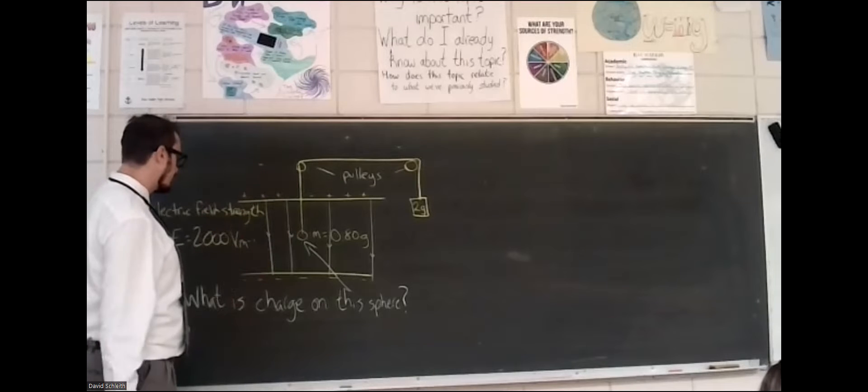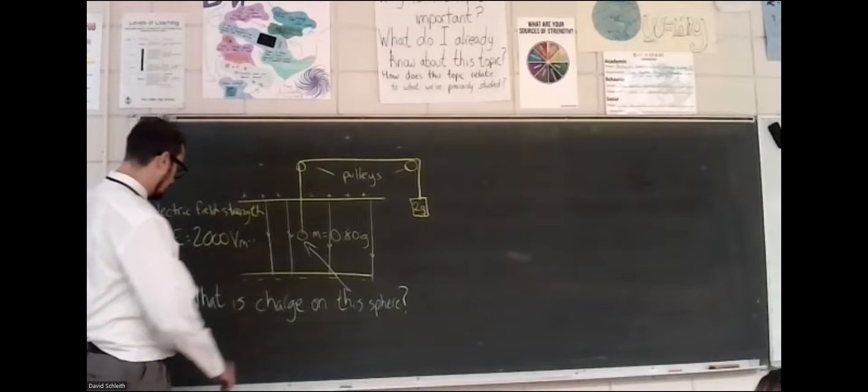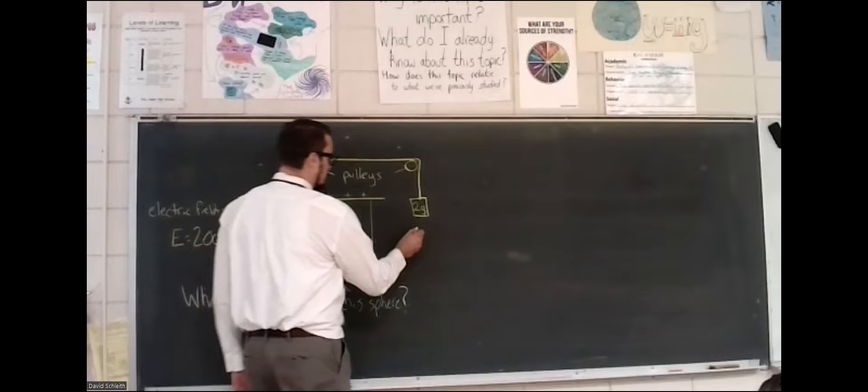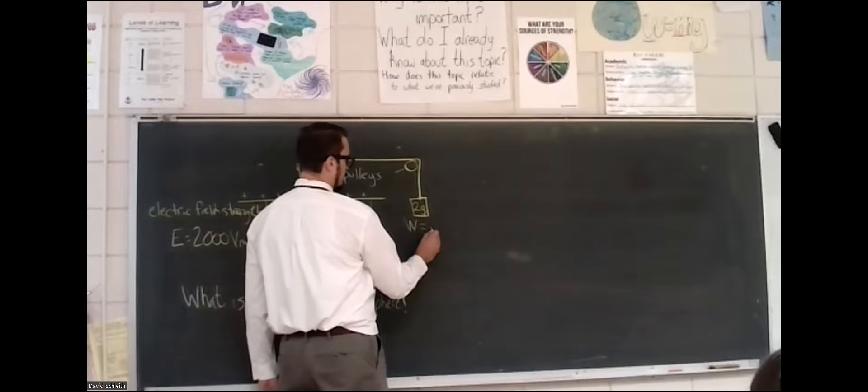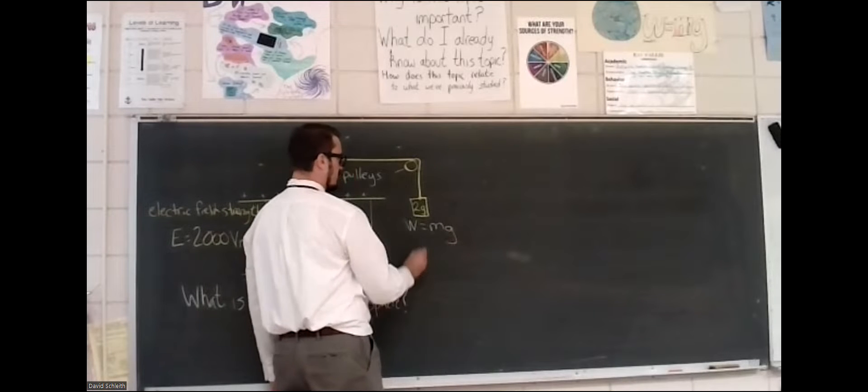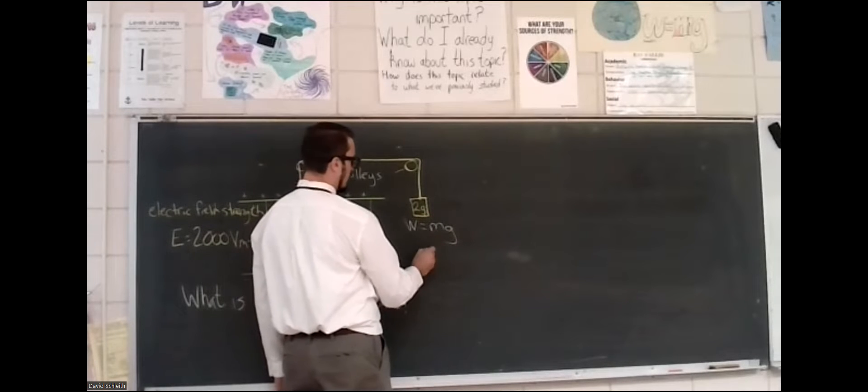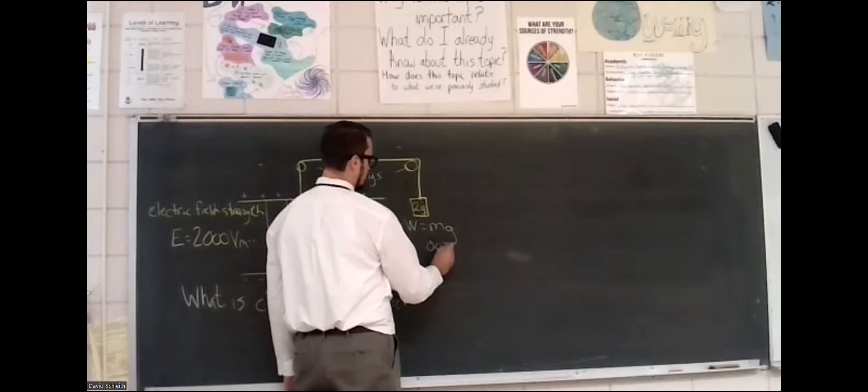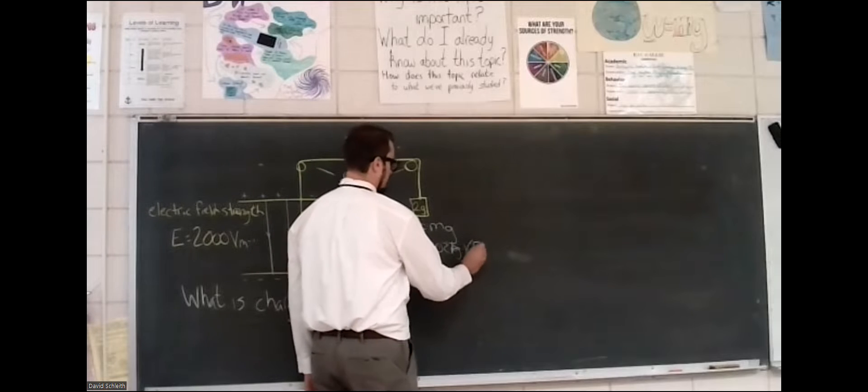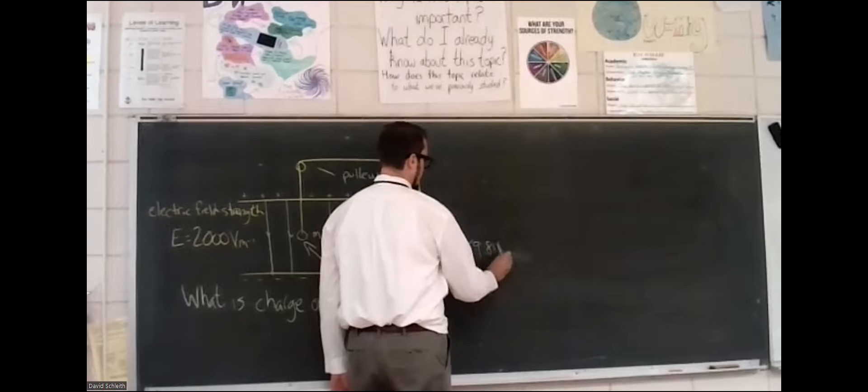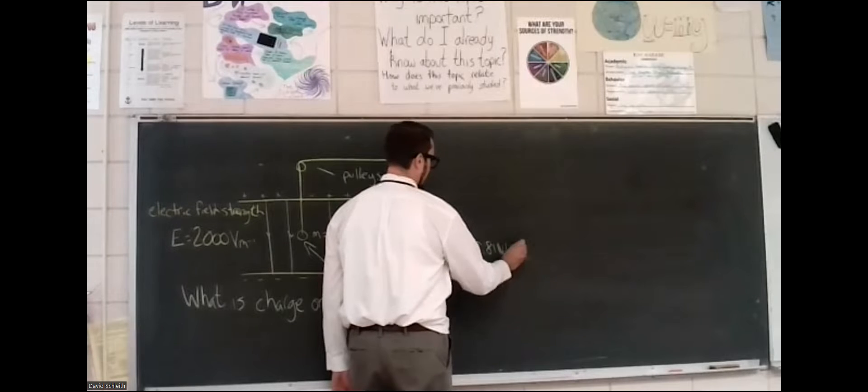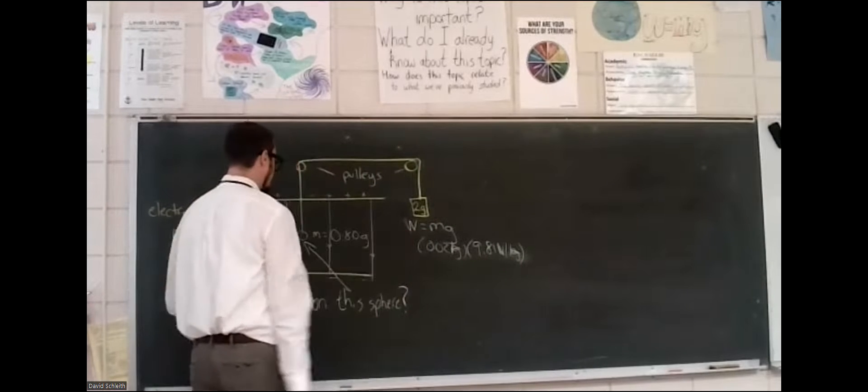The pulley is in equilibrium with it. And so the first thing that I'm going to calculate is the weight of these objects. The weight of something is its mass times the acceleration due to gravity. Something that is 2 grams is 0.002 kilograms. Multiply that by 9.81 newtons per kilogram, converting the mass into weight.